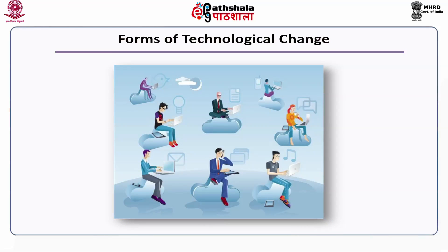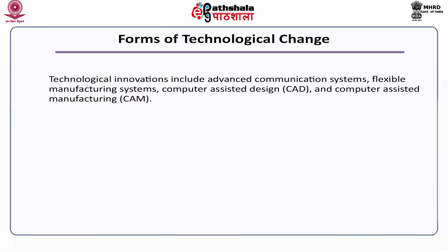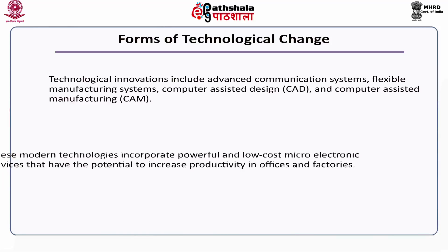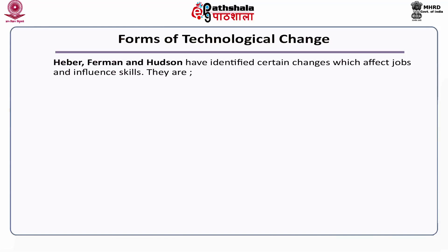Forms of technological change include advanced communication systems, flexible manufacturing systems, computer-assisted design and computer-assisted manufacturing. These modern technologies incorporate powerful and low-cost micro-electronics devices that have the potential to increase productivity in offices and factories. Heber, Furman, and Hudson have identified certain changes which affect jobs and influence skills.